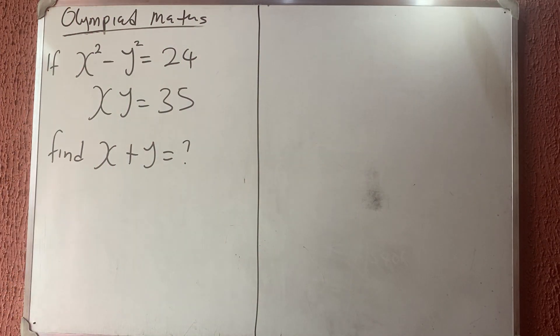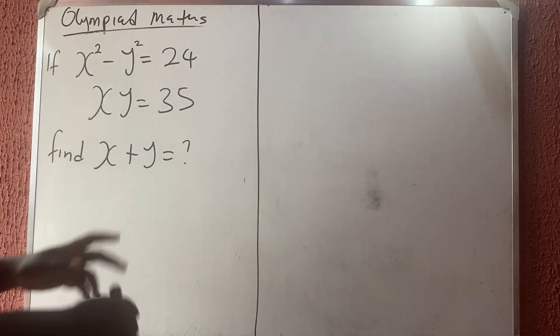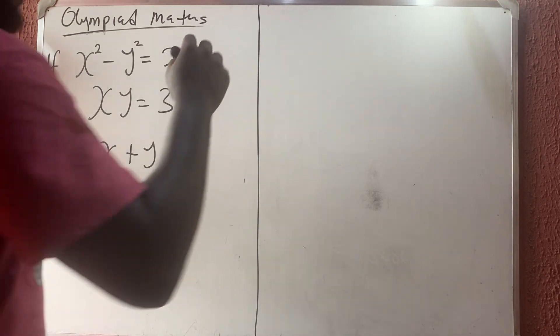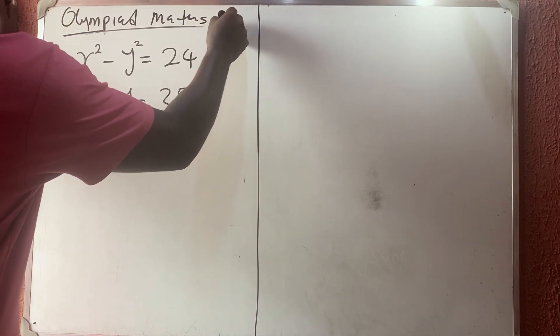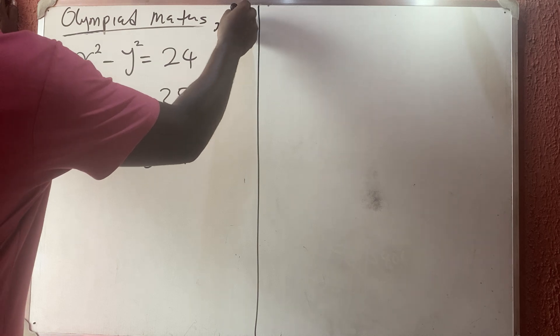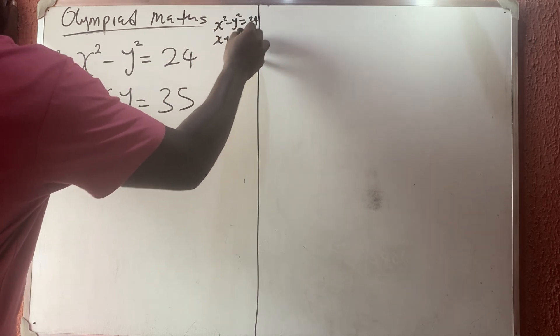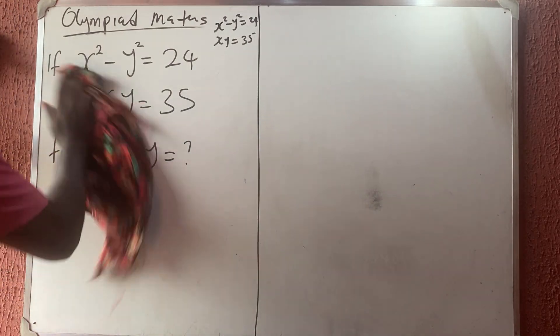Welcome back to our third Olympiad math problem. They said that if x squared minus y squared is 24 and x times y is 35, we should find x plus y. Let me write it out: x squared minus y squared equals 24, and xy equals 35.